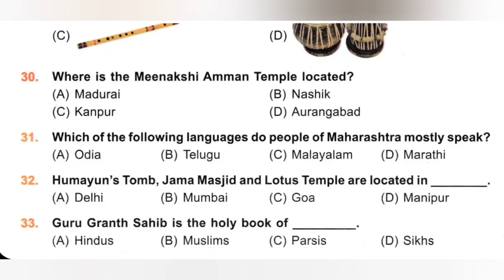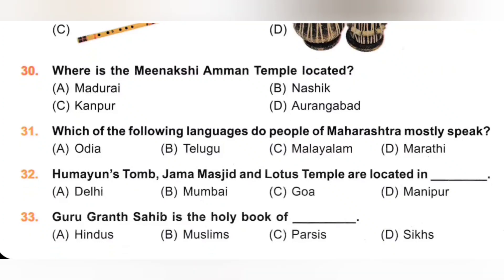33rd. Guru Granth Sahib is the holy book of: A. Hindus, B. Muslims, C. Parsis, D. Sikhs. Guru Granth Sahib is the holy book of Sikhs. Option D is the correct answer.